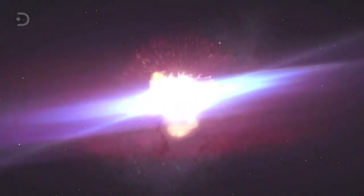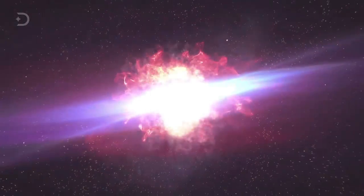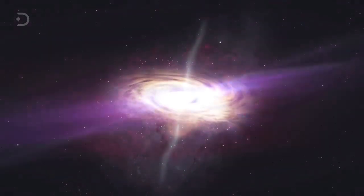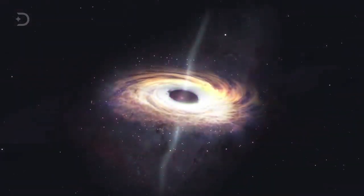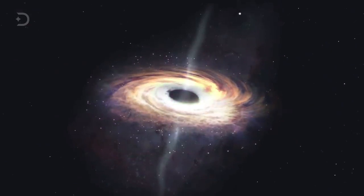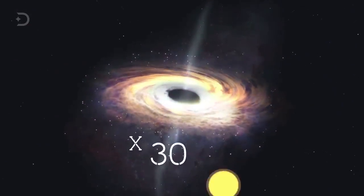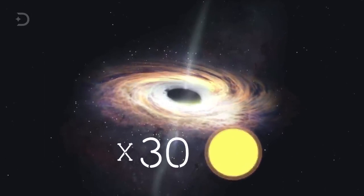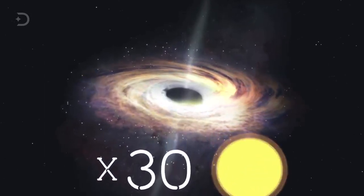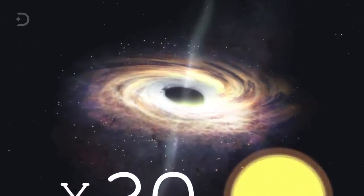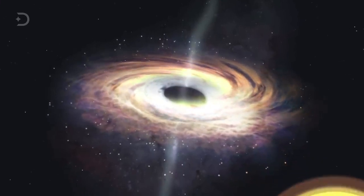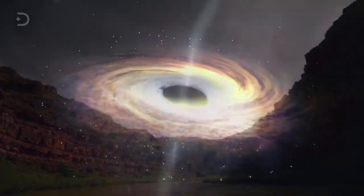A hypernova, or what is called a Collapsar, is a very energetic supernova thought to result from an extreme core collapse scenario. In this case, a massive star equal to 30 solar masses collapses to form a rotating black hole emitting twin energetic jets and surrounded by an accretion disk.